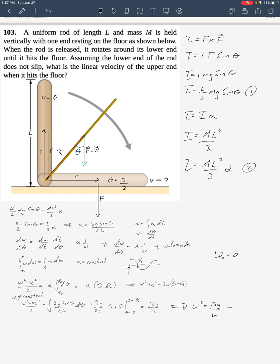So, let's simplify this and I get that omega squared is equal to 3g over L. Then, omega has to be equal to the square root of 3g over L. And finally, v equals R omega.